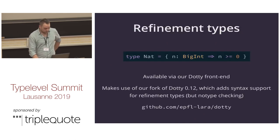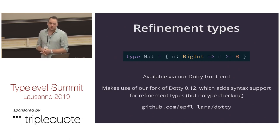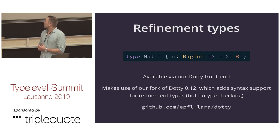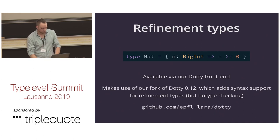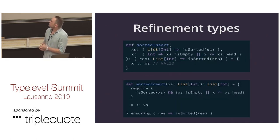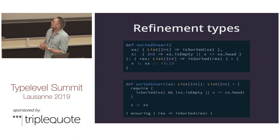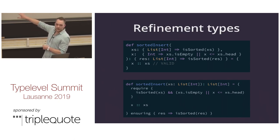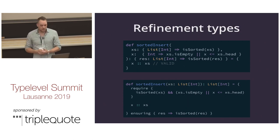As a little bonus, if you use our Dotty frontend, we have support for source-level refinement types. We didn't touch the Dotty typer — we just added syntax support and handle the refinements within Stainless. As an example: a sorted insert function can require that the input list is already sorted and the element is smaller than the head if the list is non-empty, and assert that the result is a sorted list. You can write this with require/ensuring or with refinement type syntax — it's a matter of taste.